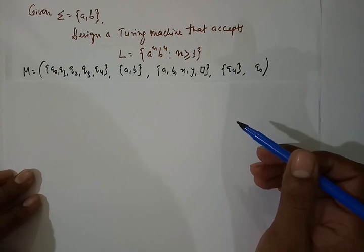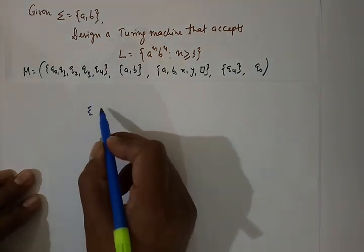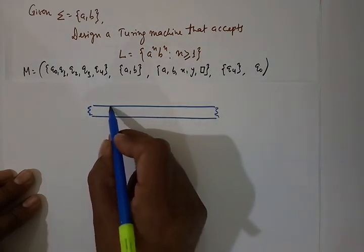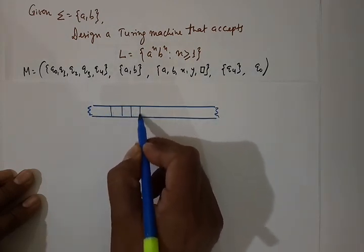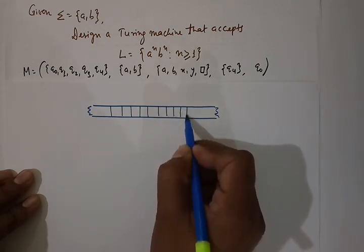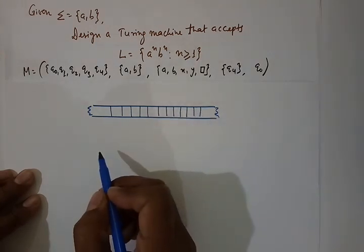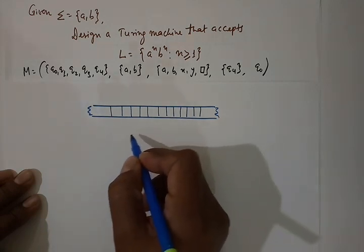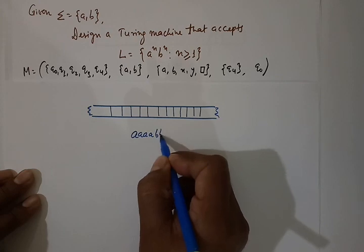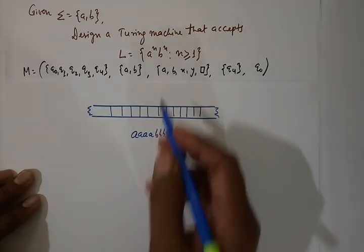q4 will be our final state and q0 is our initial state. The delta function is the most important part. Before writing the delta function, we build up a logic for how strings belonging to this language should be accepted. Our input tape will have, for example, 4 a's followed by 4 b's.